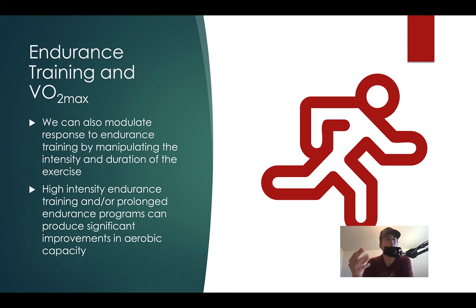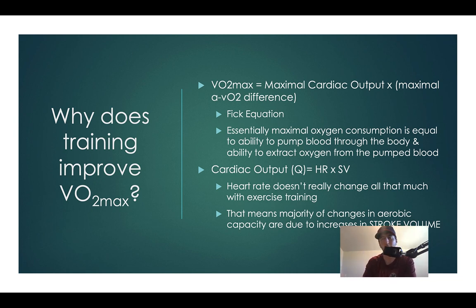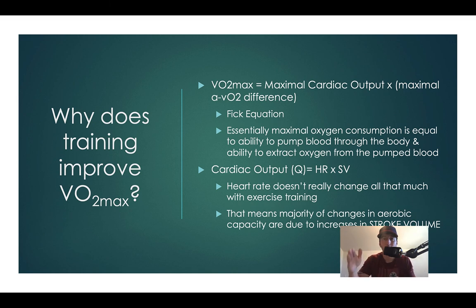Duration needs to be at least 20 minutes, intensity needs to be at least 50% — more like significantly higher — and frequency needs to be at least three times a week, more like five to six days per week. Now, how does endurance training really improve VO2 max? VO2 max equals maximal cardiac output — Q equals HR times SV — times the maximal a-vO2 difference. So we're looking at how much blood the heart can pump out and how much oxygen we can extract as we go through the body.